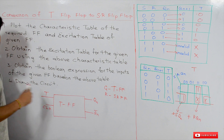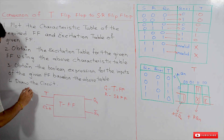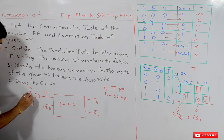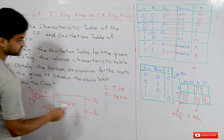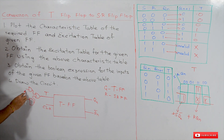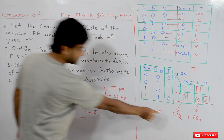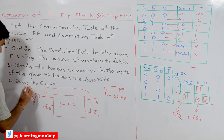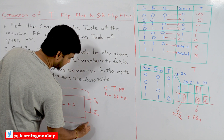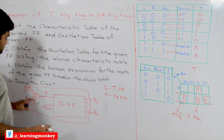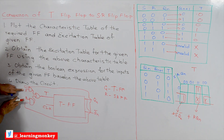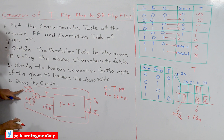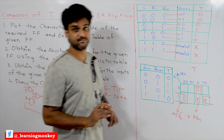The extra combinational circuit is implemented using two AND gates connected to an OR gate. The inputs are: one AND gate takes S and Q̄n, and the other AND gate takes R and Qn. By supplying the values of S and R through this combinational circuit to the T input, this T flip-flop now acts as a SR flip-flop.